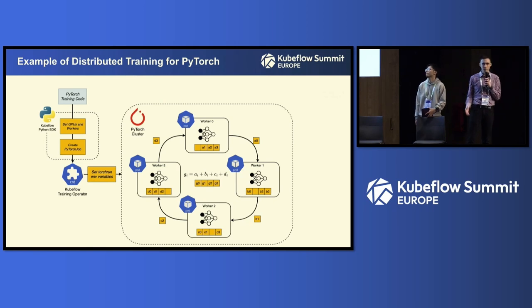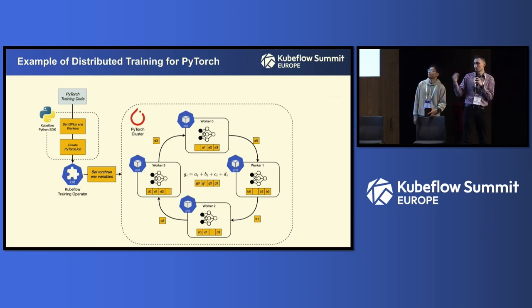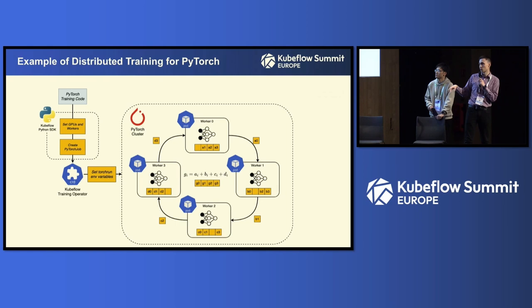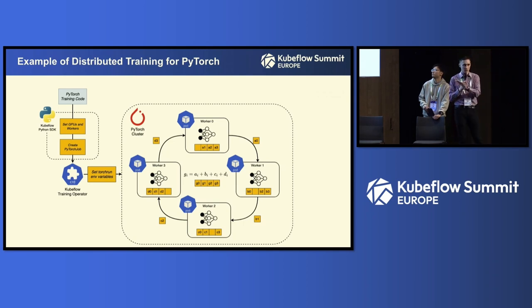Here's an example of all-reduce type training with PyTorch in the Training Operator. If you're familiar with PyTorch, it has the Torch Run CLI which helps spin up workers — and the Training Operator does that for you. From the user perspective, they just set how many GPUs they have and start the PyTorch job. The Training Operator spawns the trials, which share gradients between workers, averaging them to train the model across multiple workers, distributing both model and data.